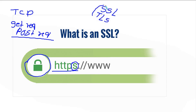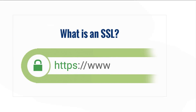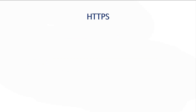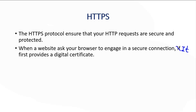SSL and TLS wrap our communication. We know our communication is secure when we find the lock icon on our browser — that simply means our communication is wrapped by Secure Socket Layer and Transport Layer Security. HTTPS — Hypertext Transport Protocol Secure — ensures that your HTTP requests are secure and protected.